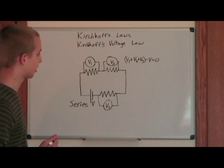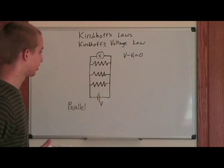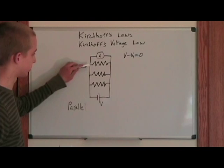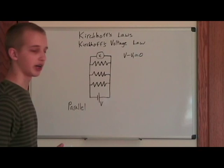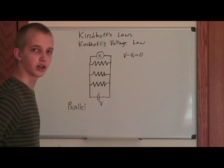Kirchhoff's Voltage Law is even simpler to use in a parallel circuit like this one, where you have a voltmeter measuring the voltage across all the resistors. All you need to do is subtract V1 from the supply voltage V, and you'll have zero. This also means that the voltage across each resistor in a parallel circuit is the same. Kirchhoff's Voltage Law is also called KVL, or Kirchhoff's Second Law.